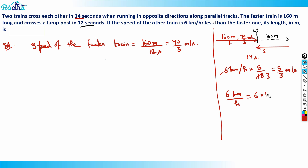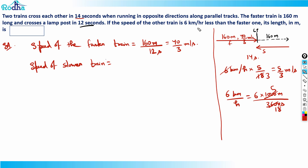We multiply by 5/18 because 1 kilometer is 1000 meters and 1 hour is 3600 seconds. So the speed of the slower train is 40/3 minus 5/3, which equals 35/3 meters per second.